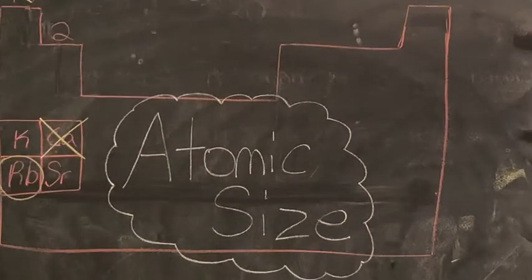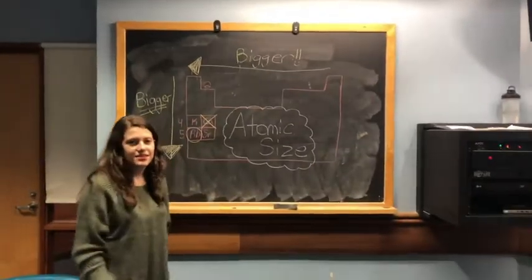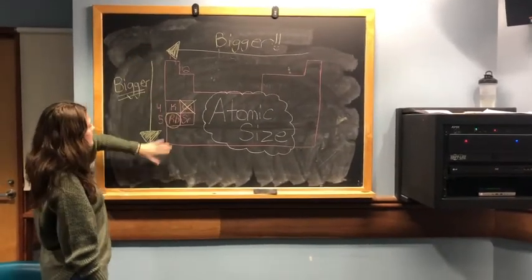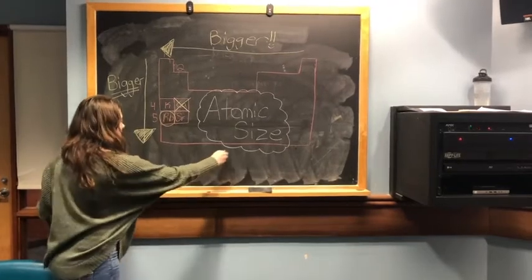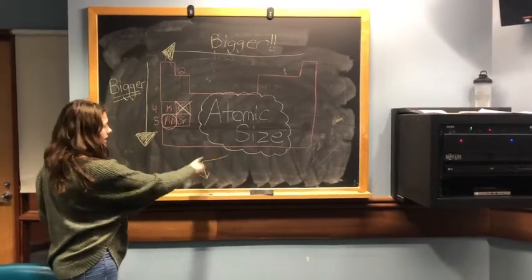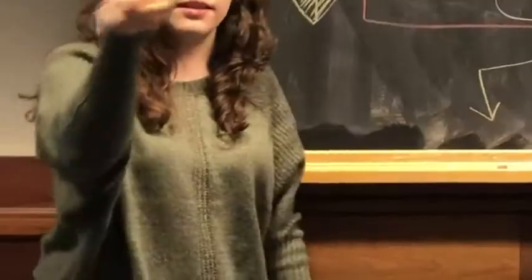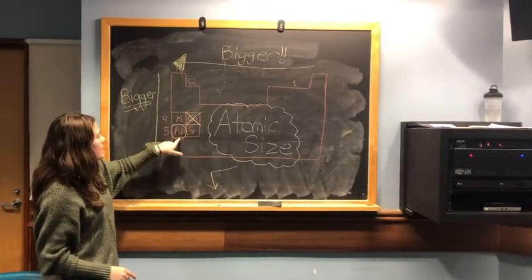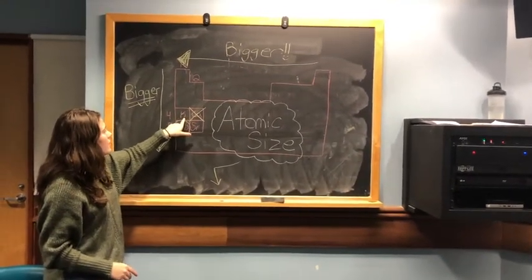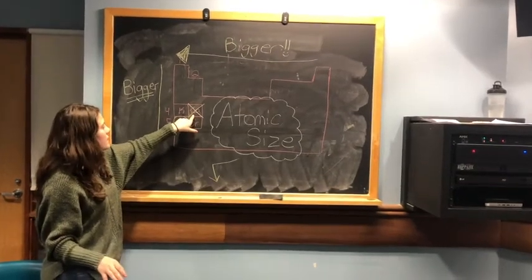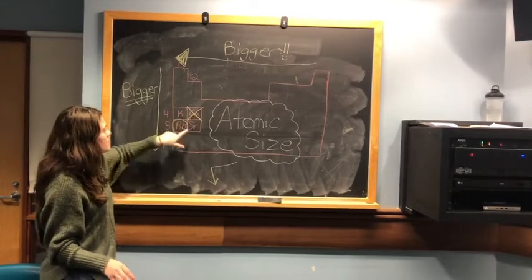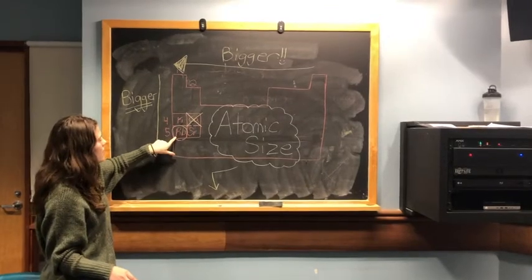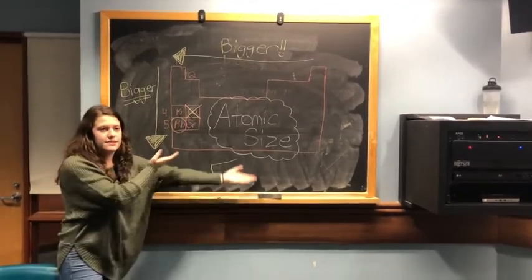Here's another trend about size on the periodic table: the size of elements increases going from right to left and from top to bottom — think of it as an upside-down L. For example, among four elements, the top-right one is the smallest, and the bottom-left one is the biggest. That's atomic size.